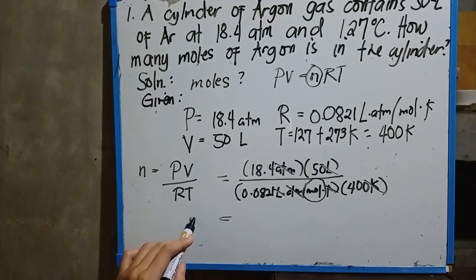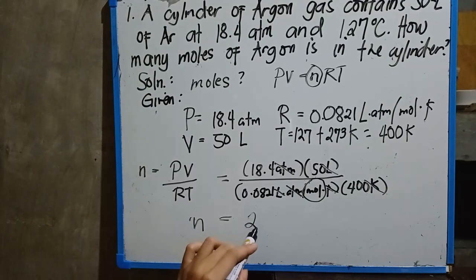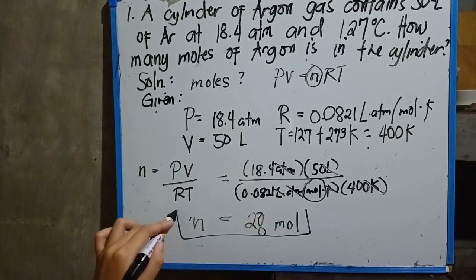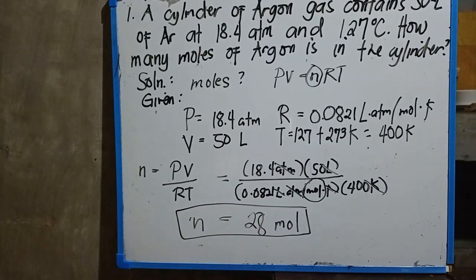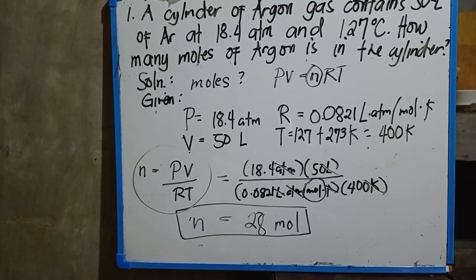It is equivalent to 28. So this is our mole of argon inside the cylinder. Let's remember, if mole is what we're looking for, this is the formula that we are going to use.